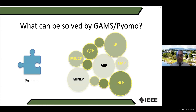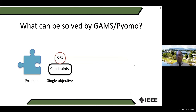What types of problems can be solved by GAMS or PyOMO? Different classes of optimization can be solved: linear programming, quadratic programming, mixed integer quadratic programming, mixed integer non-linear programming, mixed integer linear programming, non-linear programming, and bi-level optimization problems.